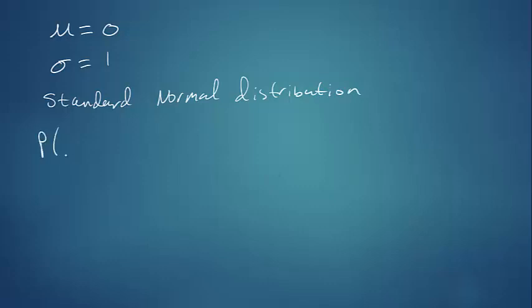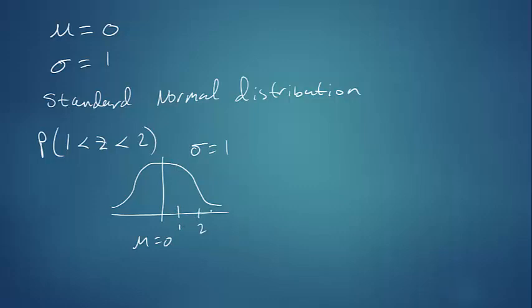Suppose we want to find the probability that an x value, or in this case a z value, would lie between 1 and 2. So if we were to draw this picture, we'd have a mean equal to 0, a standard deviation of 1. Then we would find where 1 and 2 are on the horizontal axis and shade that region. So we're finding the probability that z is between 1 and 2.